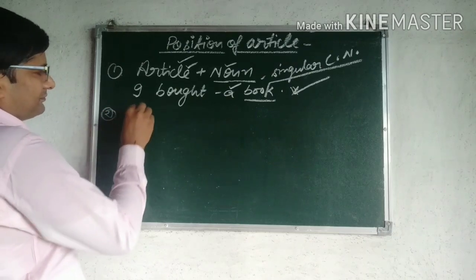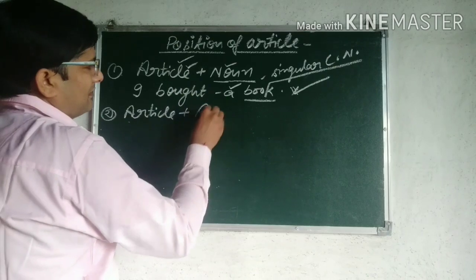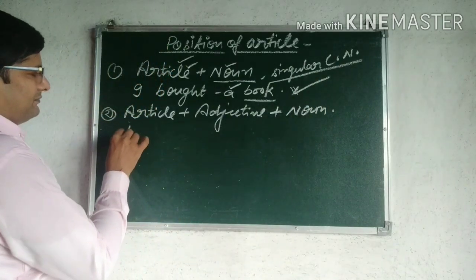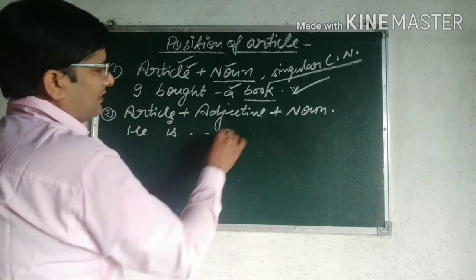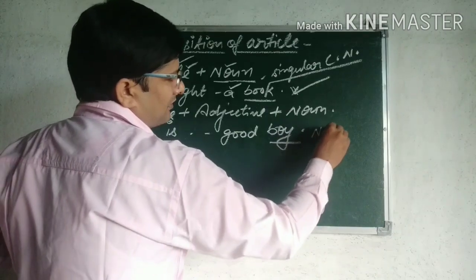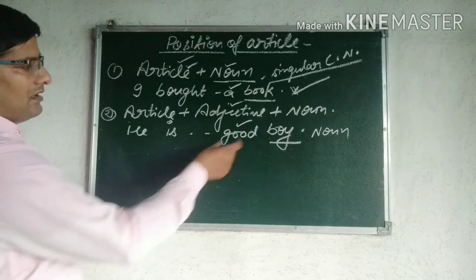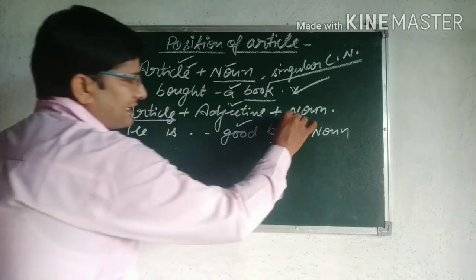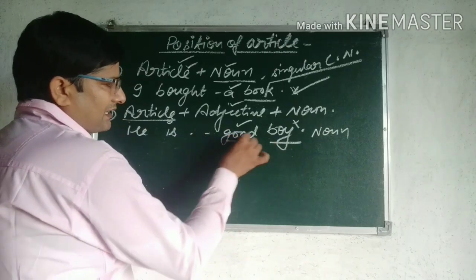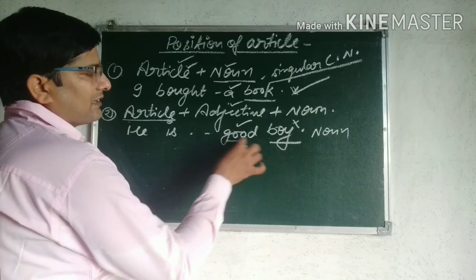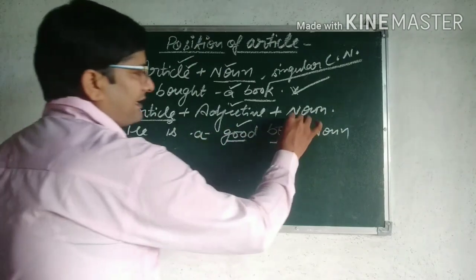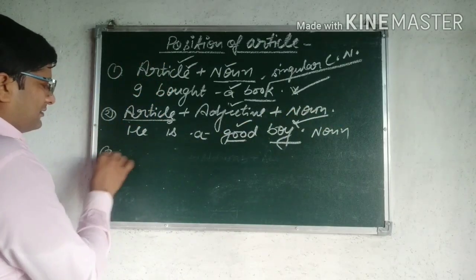Second rule: Article plus Adjective plus Noun. Example: 'He is a good boy.' Singular countable noun 'boy' — noun के ठीक पहले 'good' adjective है, और good के पहले article use होगा. Good का first sound consonant होने की वजह से article A use होगा — 'He is a good boy' — यह grammatically right sentence है.